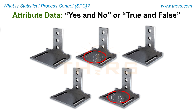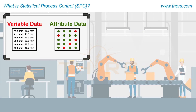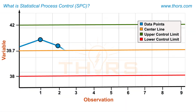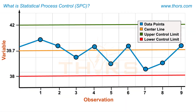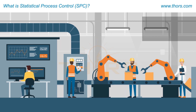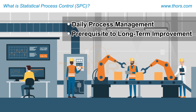Examples of attribute data include the number of parts with and without cracks, and the number of parts with and without a smooth finish. Collecting variable and attribute data is the first step in SPC. This data is then analyzed and summarized to understand process behavior, predict process performance, and decide the course of action. SPC is important for the daily management of processes and is therefore a prerequisite to long-term improvement.